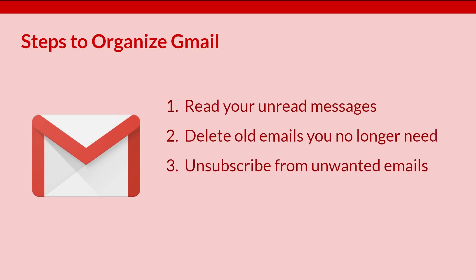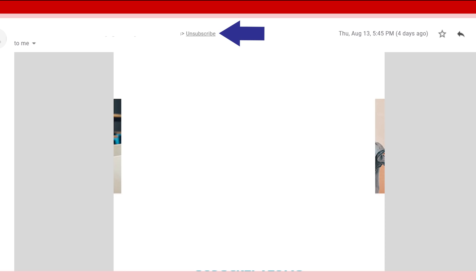Unsubscribe from unwanted emails. You may have used your school Gmail to sign up for a tech tool you use in school, and now you're receiving updates. You can unsubscribe from email lists by opening the email and clicking the unsubscribe option at the top. Sometimes this is located at the bottom of the email as well.